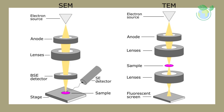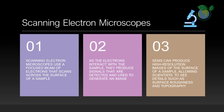Scanning electron microscopes use a focused beam of electrons that scans across the surface of a sample. As the electrons interact with the sample, they produce signals that are detected and used to generate an image. SEMs can produce high-resolution images of the surface of a sample, allowing scientists to see details such as surface roughness and topography.